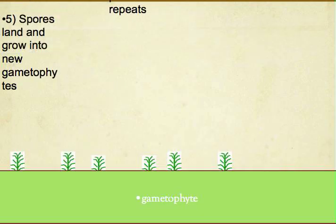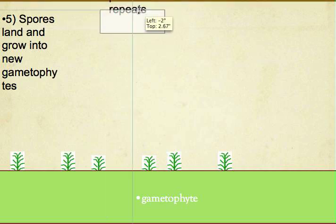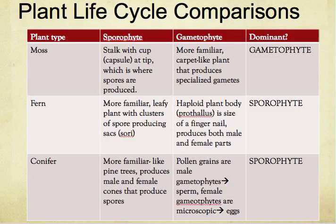There's more to the process. The next step is the gametophyte stage, where the spore lands and it grows into new gametophytes. The last step is the process repeats again.